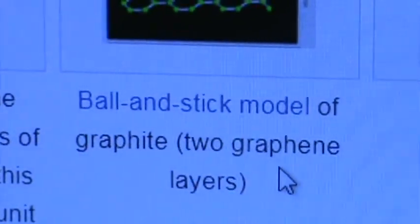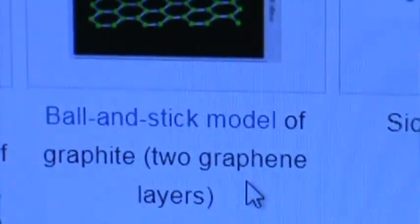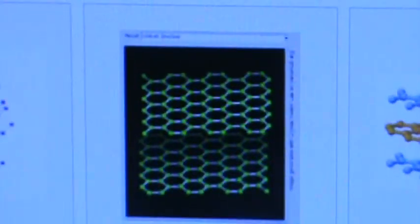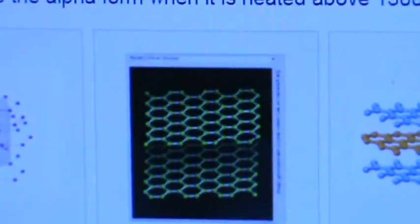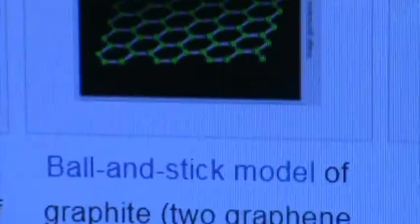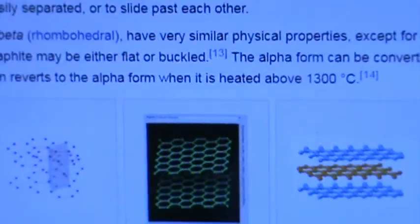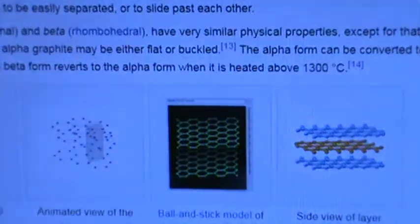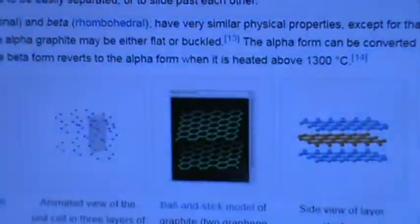Ball and stick model of graphite — it's two graphene layers. Graphene equals godson and graphite equals godfather. Is graphite really just defined as two layers of graphene? Apparently graphite is just a pancake stack of graphene. Graphene is godson, graphite is godfather.